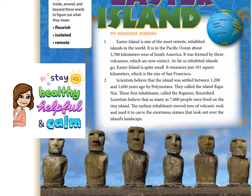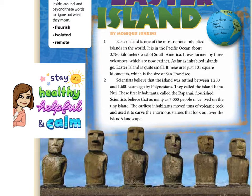Paragraph 1: Easter Island is one of the most remote inhabited islands in the blank. It is in the Pacific Ocean about 3,780 kilometers west of South America. It was formed by three blank, which are now extinct. As far as inhabited islands go, Easter Island is quite small — it measures just 101 square kilometers, which is the size of San Francisco.